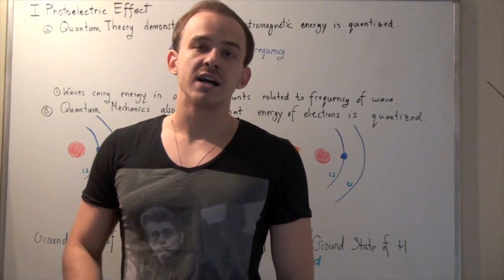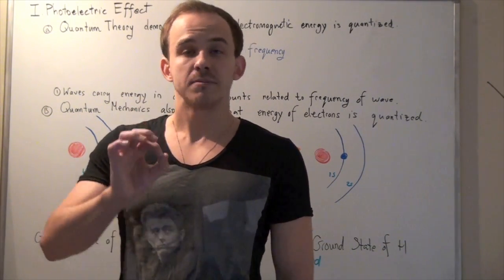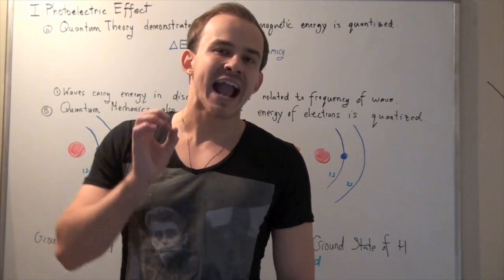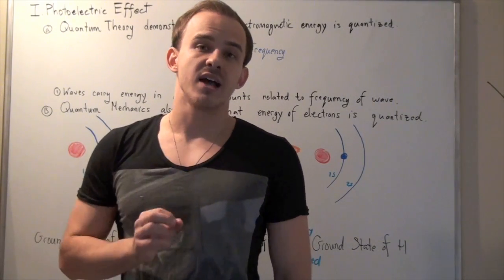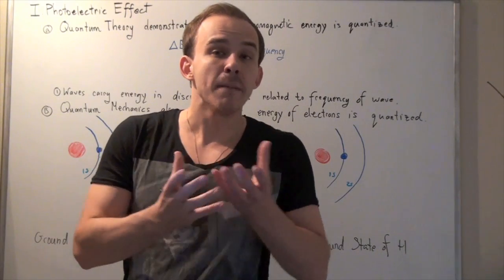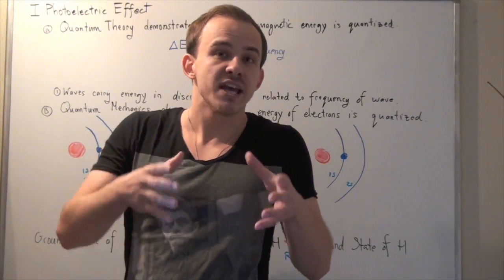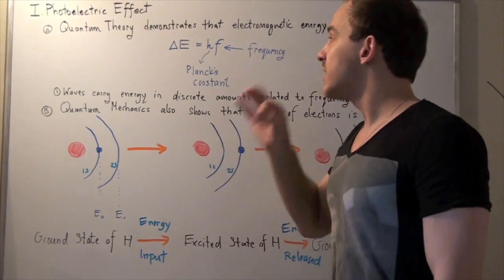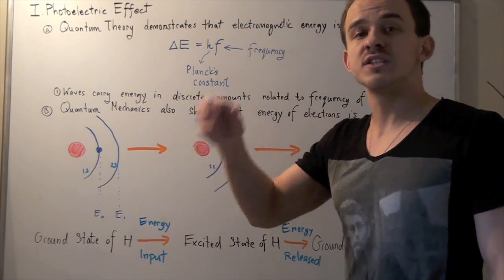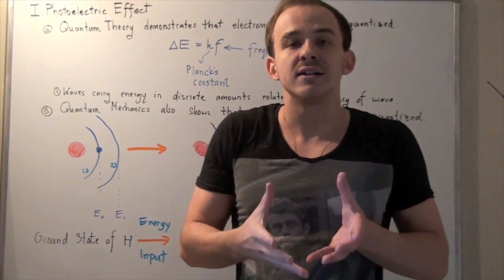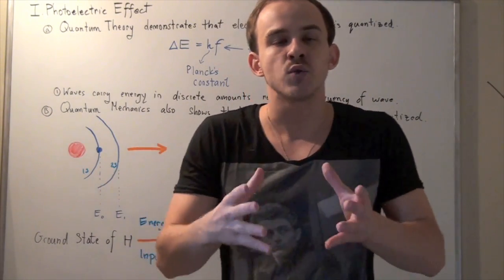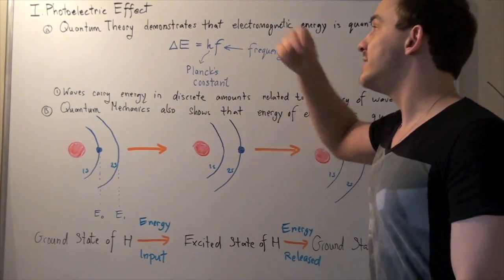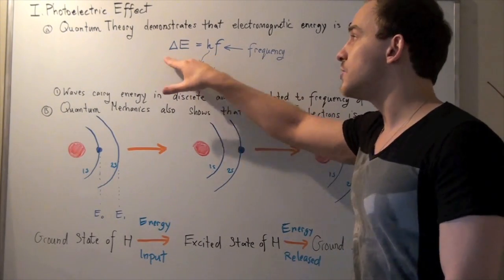In this lecture, I'd like to talk about a very cool concept known as the photoelectric effect. This effect becomes very important whenever you're talking about light or electrons. Quantum theory demonstrates that electromagnetic energy is carried in bits or pieces — it's quantized. Whenever an electromagnetic wave, such as light, propagates, it carries bits of energy. The amount of energy carried by that wave is equal to Planck's constant h times the frequency of that wave. So if we increase the frequency, we increase the quantized bit of energy, and if we decrease the frequency, we likewise decrease the energy.